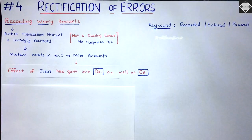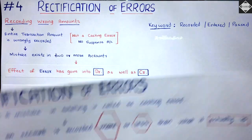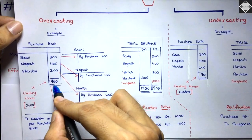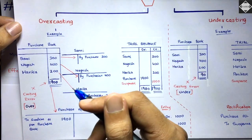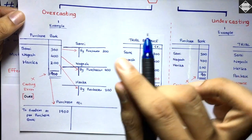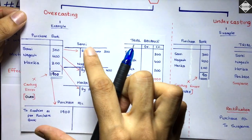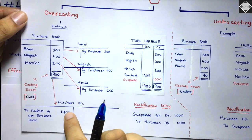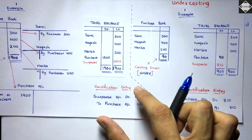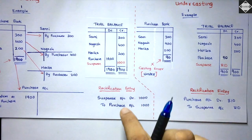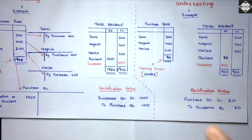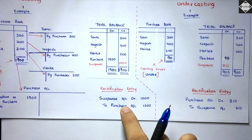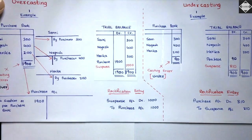This is not a casting error. In casting errors, as we discussed in the previous video, we make a mistake while totaling a subsidiary book like the purchase book. The effect of that error goes into only one account — for example, only the debit side of the purchase account. To rectify it, you use a suspense account to complete the other side.